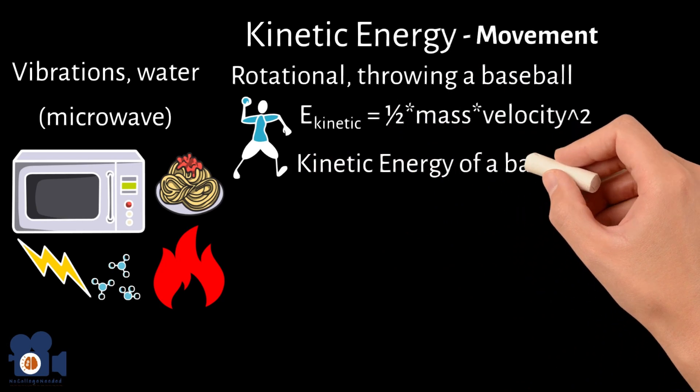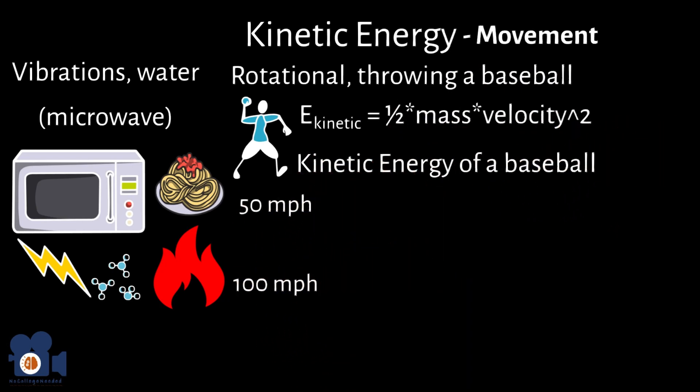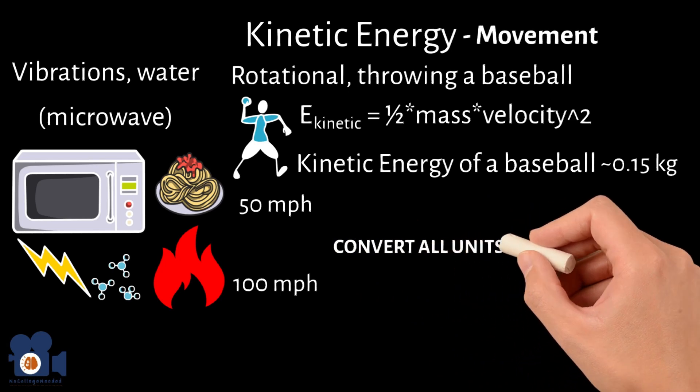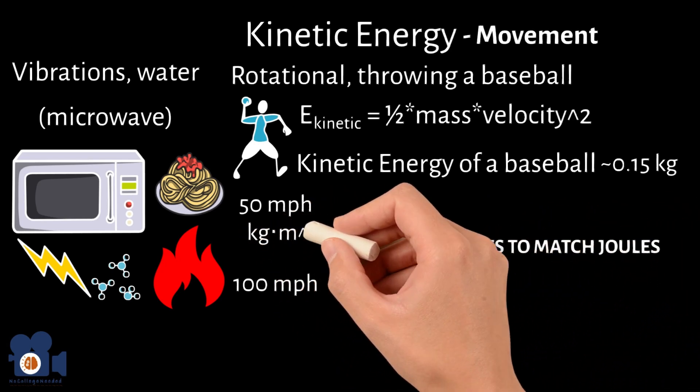For fun, let's calculate the kinetic energy of a baseball at 50 miles per hour versus 100 miles per hour. The approximate weight of a baseball is 0.15 kilograms. Remember, we must convert all the units to the units that match Joules, namely kilogram times meters squared divided by seconds squared.